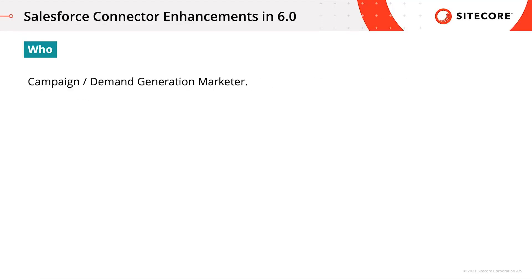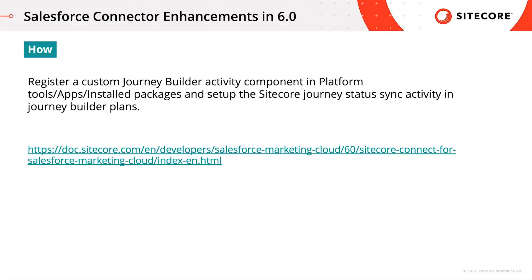This feature was made for campaign and demand generation marketers in mind. The way to leverage it is by registering a custom journey builder activity component in platform tools, under apps, under installed packages in Salesforce Marketing Cloud, and setting up the Sitecore journey status sync activity in your journey builder plans. For more information, please visit doc.sitecore.com under developers and IT guides to find more information on how to install and configure the connector in your instances.